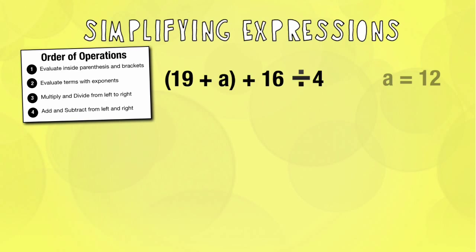So the first thing I'm going to do is I'm going to put that 12 in there. So I'm going to do 19 plus 12 plus 16 divided by 4. Remember, we must do parentheses first. So 19 plus 12 is going to give me 31 plus 16 divided by 4.